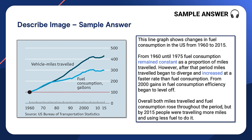How'd you go? Now let's listen to a sample answer. Pay attention to the content, oral fluency, and pronunciation of the speaker. This line graph shows changes in fuel consumption in the US from 1960 to 2015. From 1960 until 1975, fuel consumption remained constant as a proportion of miles travelled. However, after that period, miles travelled began to diverge and increased at a faster rate than fuel consumption. From 2000, gains in fuel consumption efficiency began to level off. Overall, both miles travelled and fuel consumption rose throughout the period, but by 2015, people were travelling more miles and using less fuel to do it.